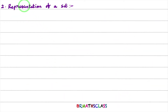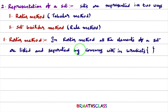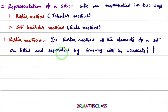The second topic is representation of a set — how we represent a set. The first method is the roster method, also known as the tabular method. The second method is the set builder method, also known as the rule method. In roster method, all the elements of a set are listed and they are separated by commas within curly brackets.